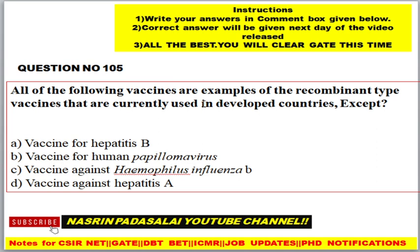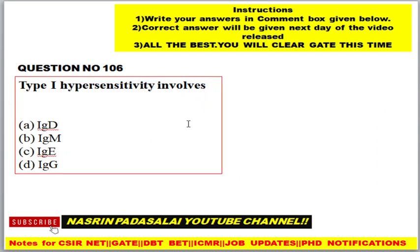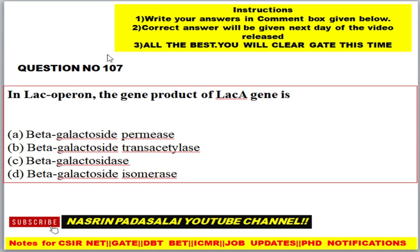Question number 105: All the following vaccines are examples of recombinant type vaccines currently used in developed countries, EXCEPT which? Options: A) Hepatitis B vaccine, B) Human papillomavirus vaccine, C) Haemophilus influenzae type B vaccine, D) Hepatitis E vaccine.